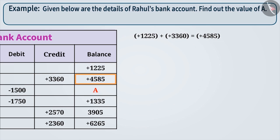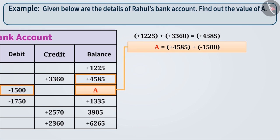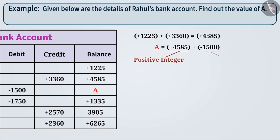Similarly, if we add plus 4585 and minus 1500, then we get the value of A. That is, A is equal to 4585 plus minus 1500.